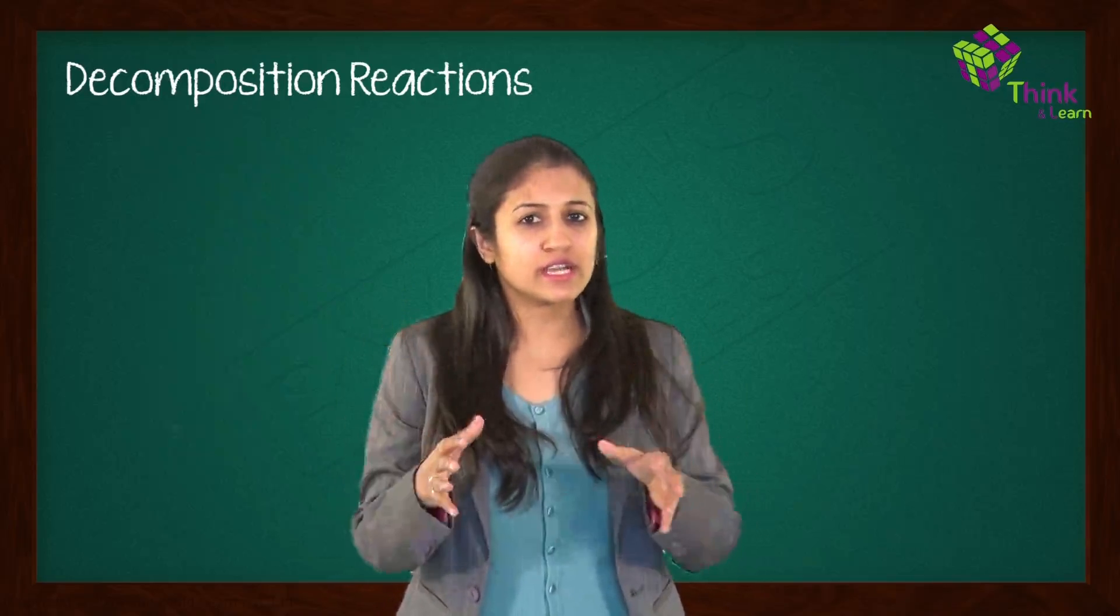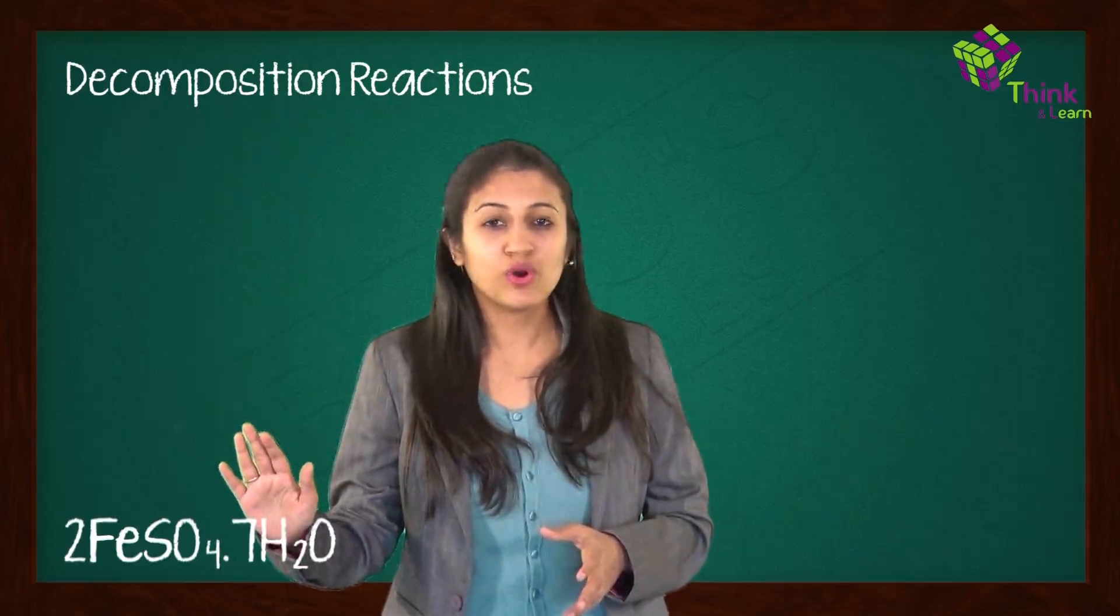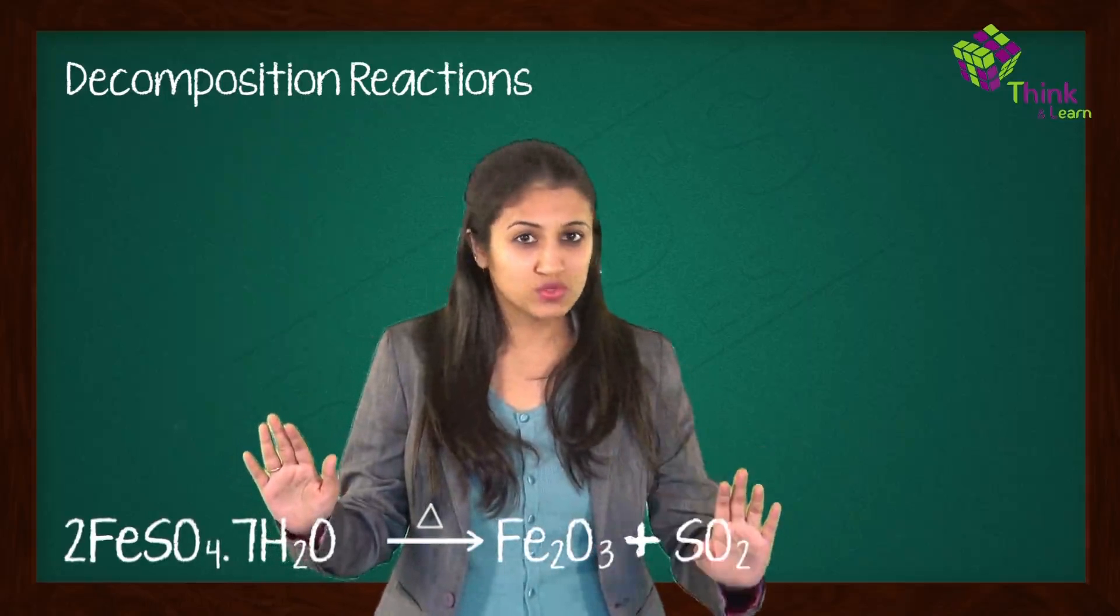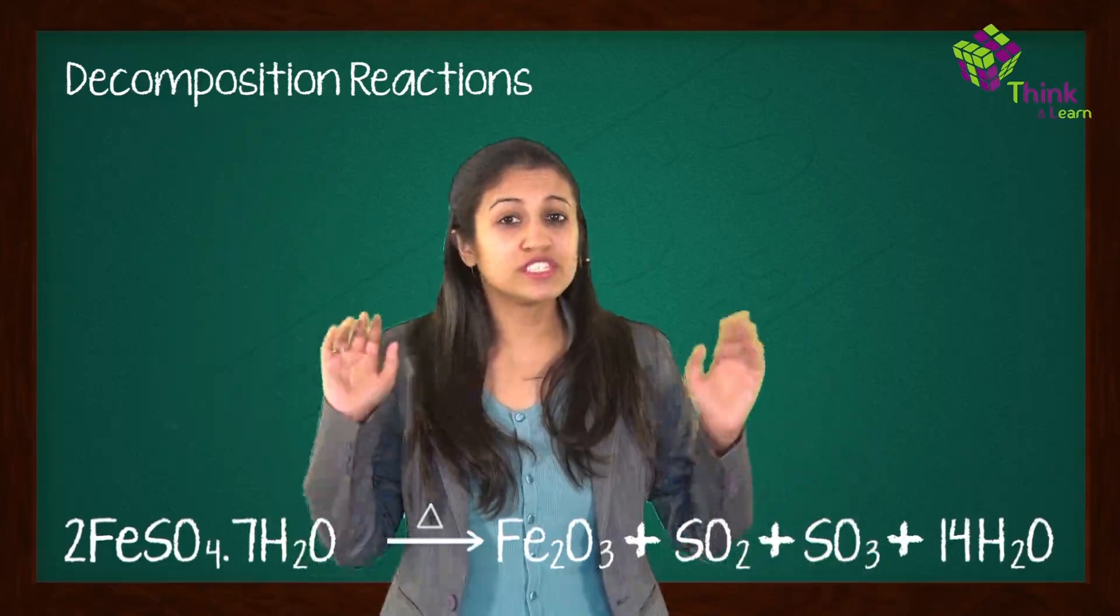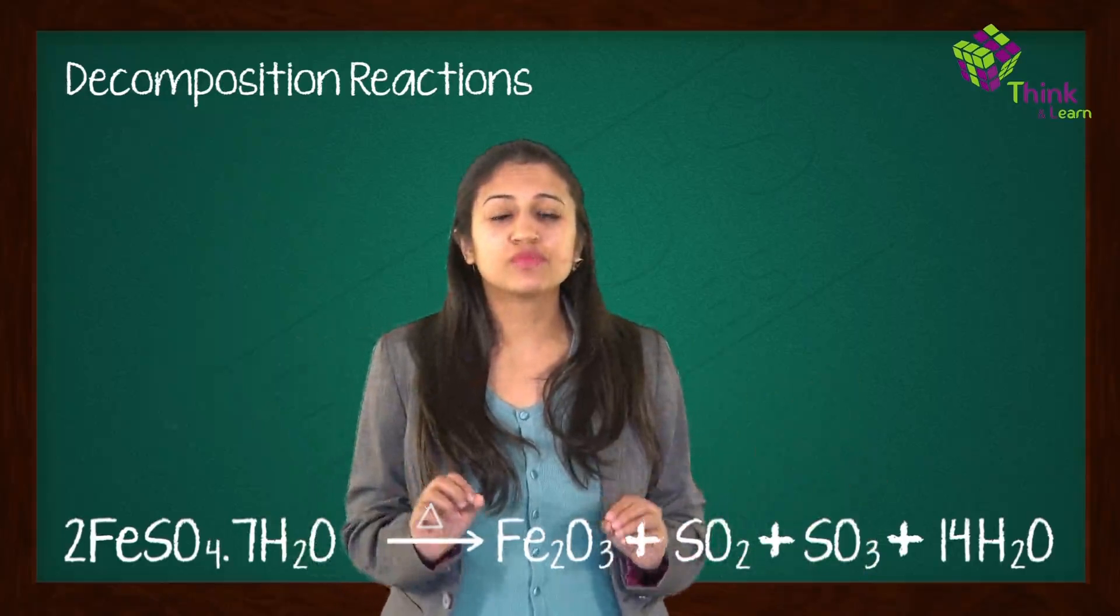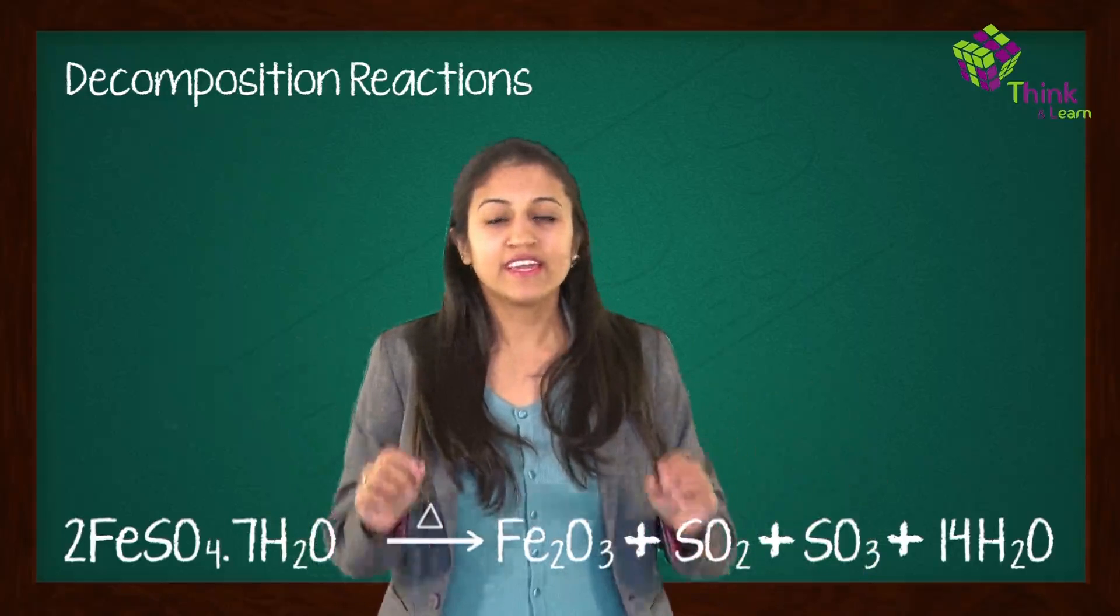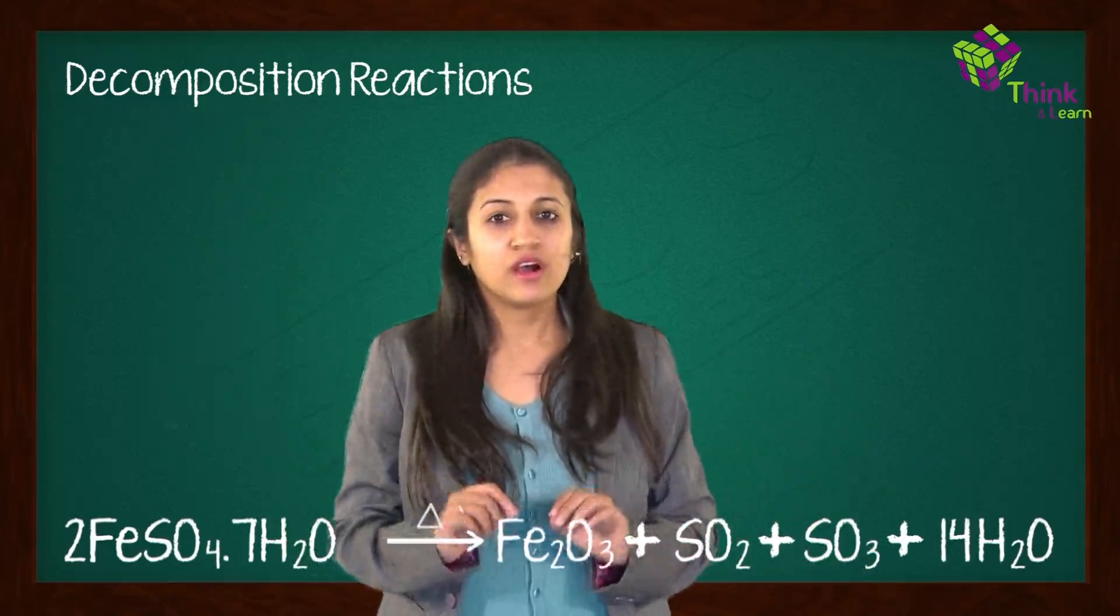Let's consider the decomposition of ferrous sulfate. The representation is like this: 2FeSO4·7H2O will give you Fe2O3 plus SO2 plus SO3 plus 14H2O. Since it's decomposition, you need something to be given as a trigger for this reaction. In this case, it is heat.